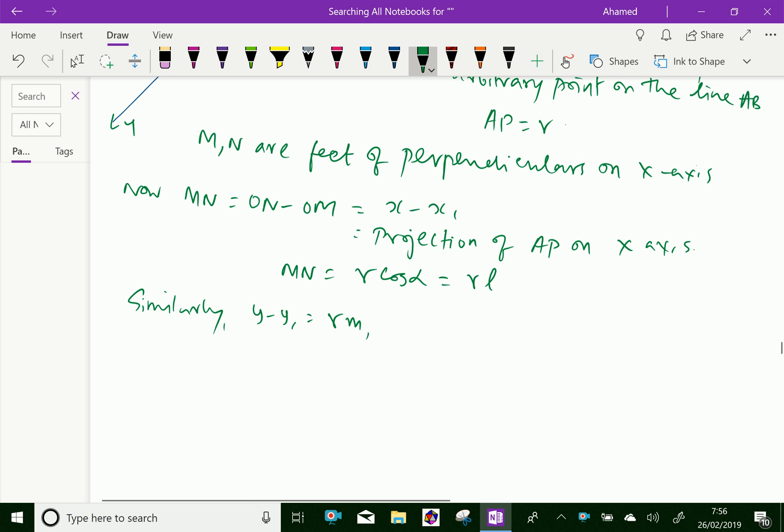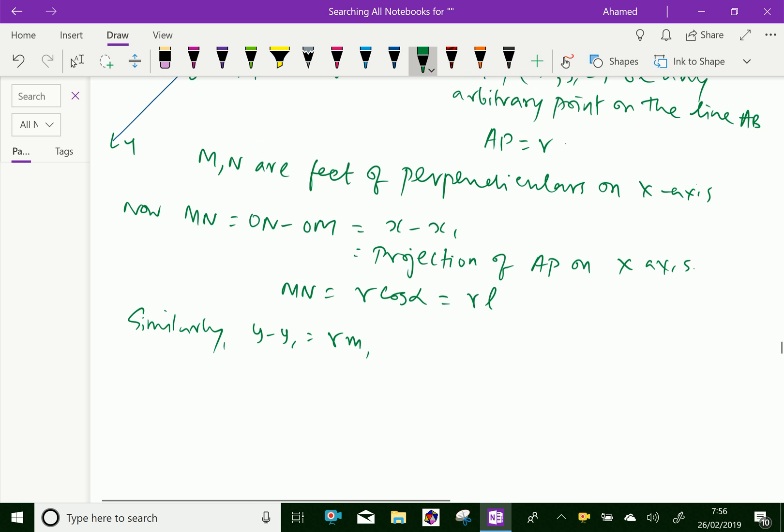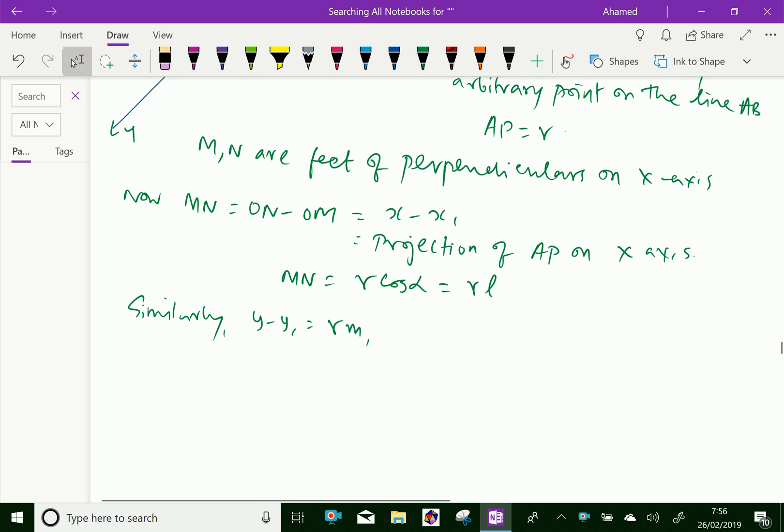And similarly, Z minus Z1 is a projection of the line on Z-axis. That is RN, where N is cos gamma.